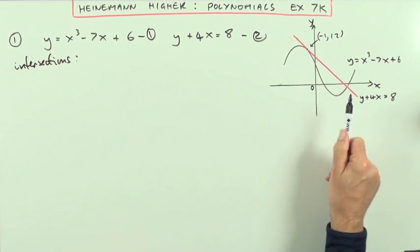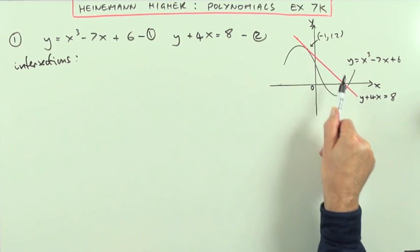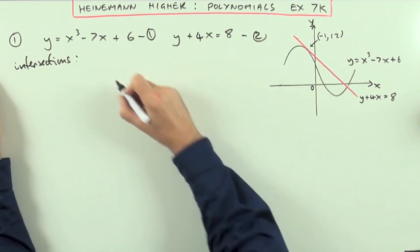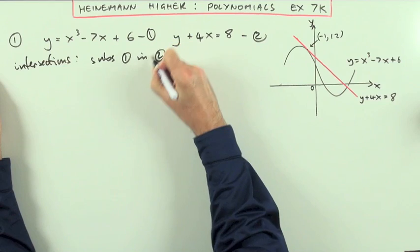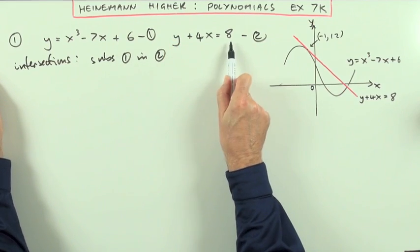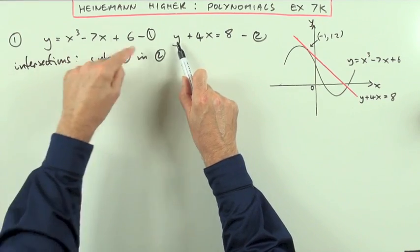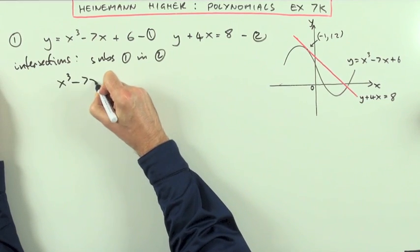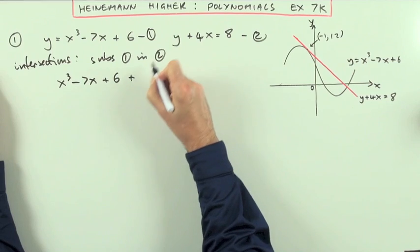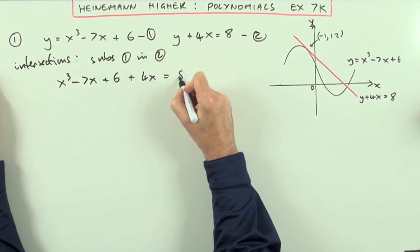So I'm looking for intersections. Intersections includes tangents and clean cuts. So I'm going to substitute 1 in 2. So equation 2 will be written down, only instead of y I'll be putting this. So instead of y I'll be putting x³ - 7x + 6, then plus the 4x equals 8.